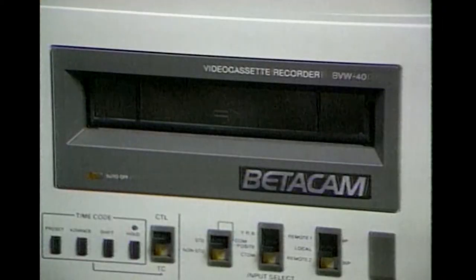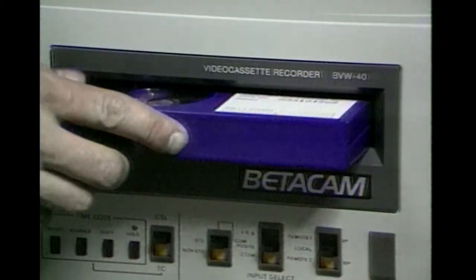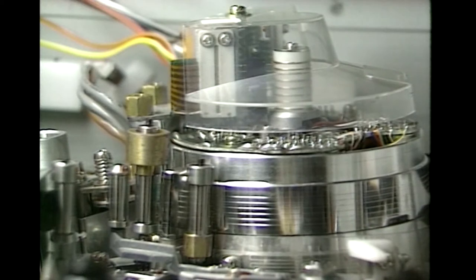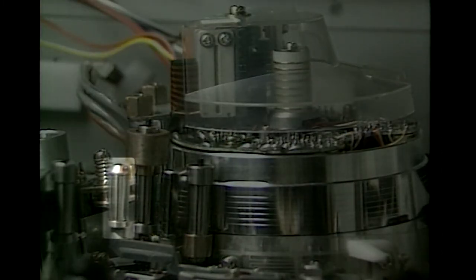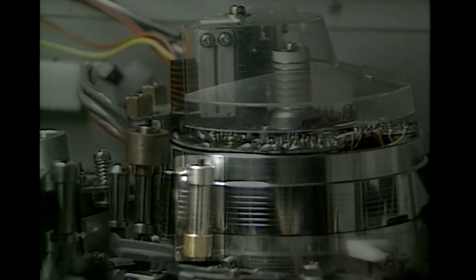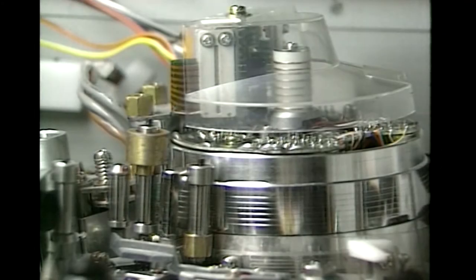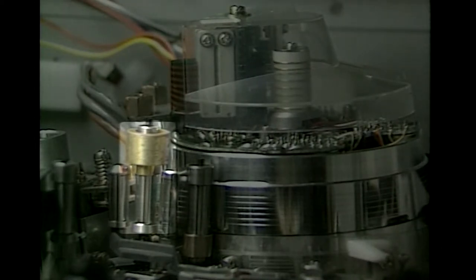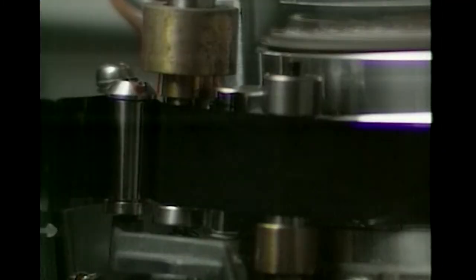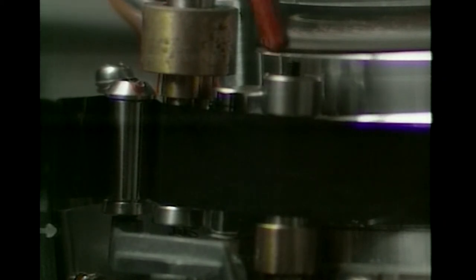In step 2, the entrance linearity will be adjusted by monitoring the off-tape video signal while playing back a Sony Betacam alignment tape. The test point to be measured is listed in the tracking procedure. Each guide is adjusted in turn, starting with the tension regulator, then tape guide 2, and finally tape guide 1. Since the tension regulator is to be adjusted first, it is important that tape guide 1 and tape guide 2 do not influence the tape path.